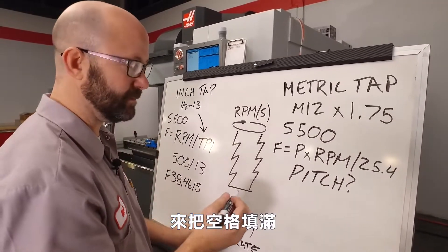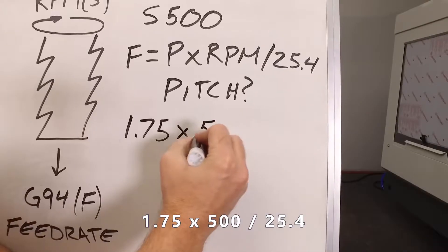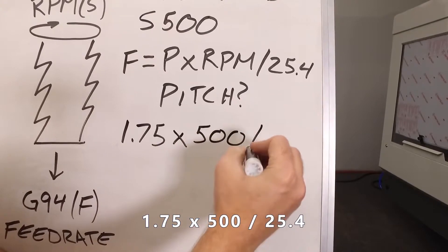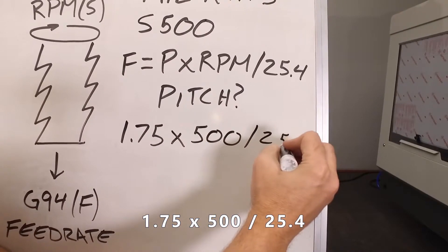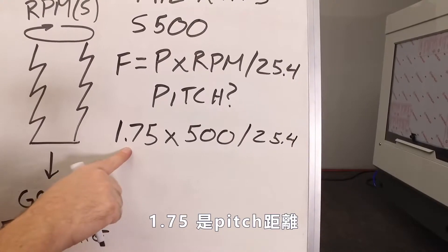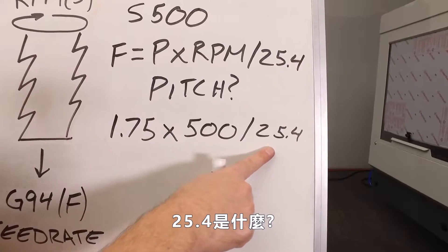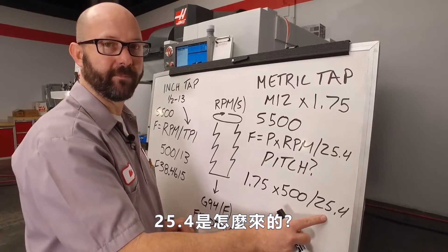Let's fill in the blanks in our formula. 1.75 times 500 divided by 25.4. 1.75 is our pitch in millimeters. 500 is our RPM.